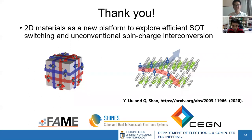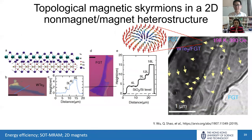A question about skyrmions in 2D materials: in the FGT page, why can skyrmions be found in FGT? Is there DMI in FGT? The question is about whether there is Dzyaloshinskii-Moriya interaction inside FGT to form the skyrmion. FGT itself is centrosymmetric and does not support bulk DMI. We therefore use a heterostructure, interfacing FGT with a heavy-metal-like 2D material — tungsten ditelluride, likely the heaviest 2D material — and this interface can provide very large DMI, enabling the skyrmion texture.